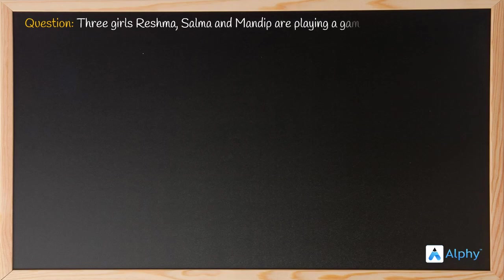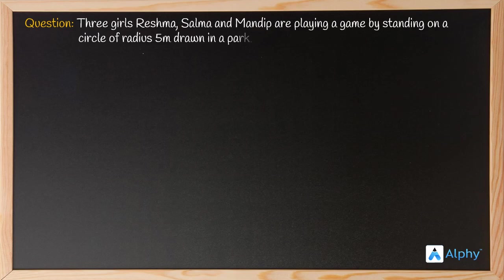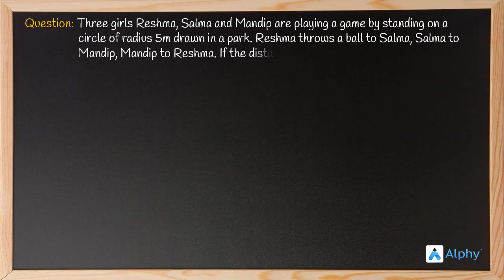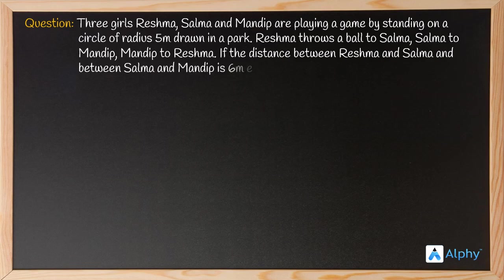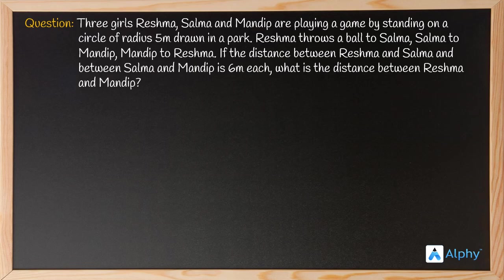Welcome back. Let's solve another question. Three girls — Reshma, Salma, and Mandeep — are playing a game by standing on a circle of radius 5 meters drawn in a park. Reshma throws a ball to Salma, Salma to Mandeep, and Mandeep to Reshma. The distance between Reshma and Salma, and between Salma and Mandeep, is 6 meters each.